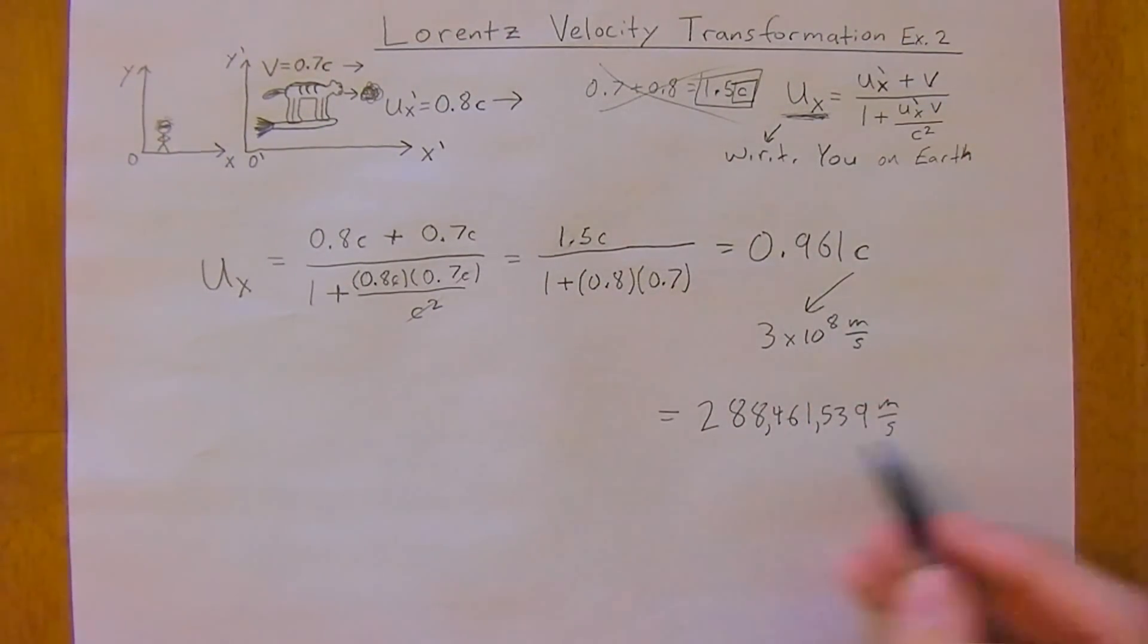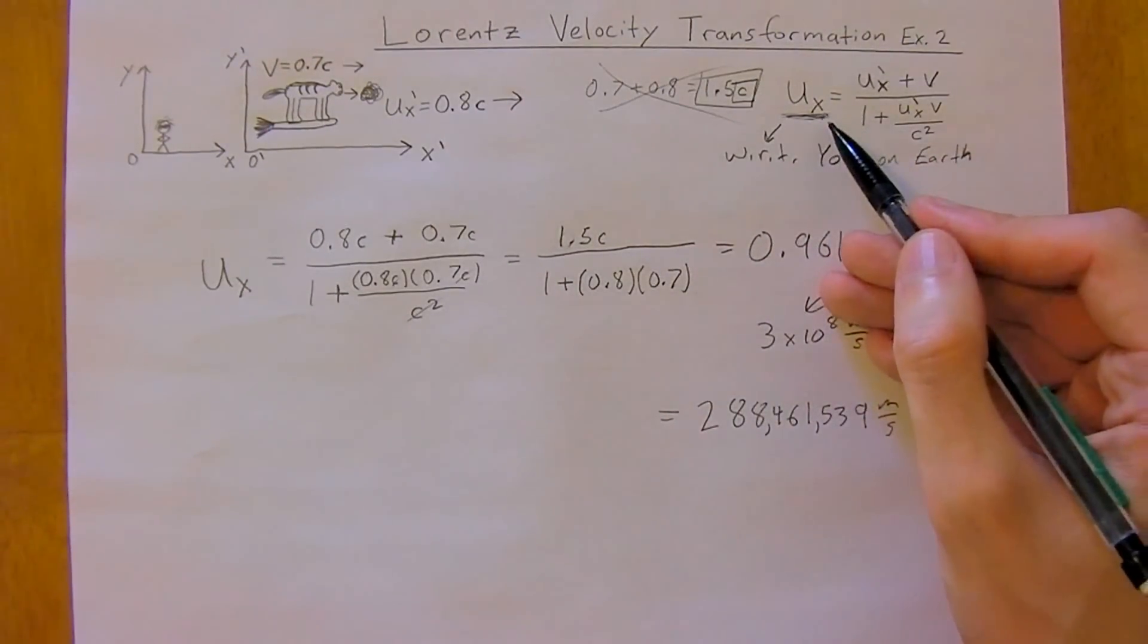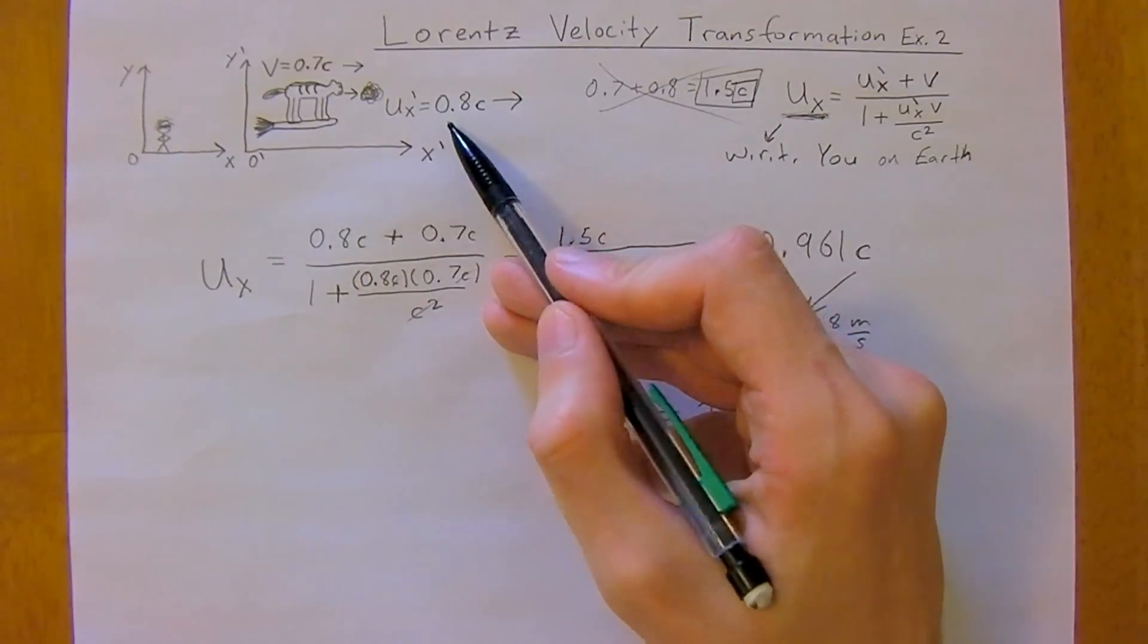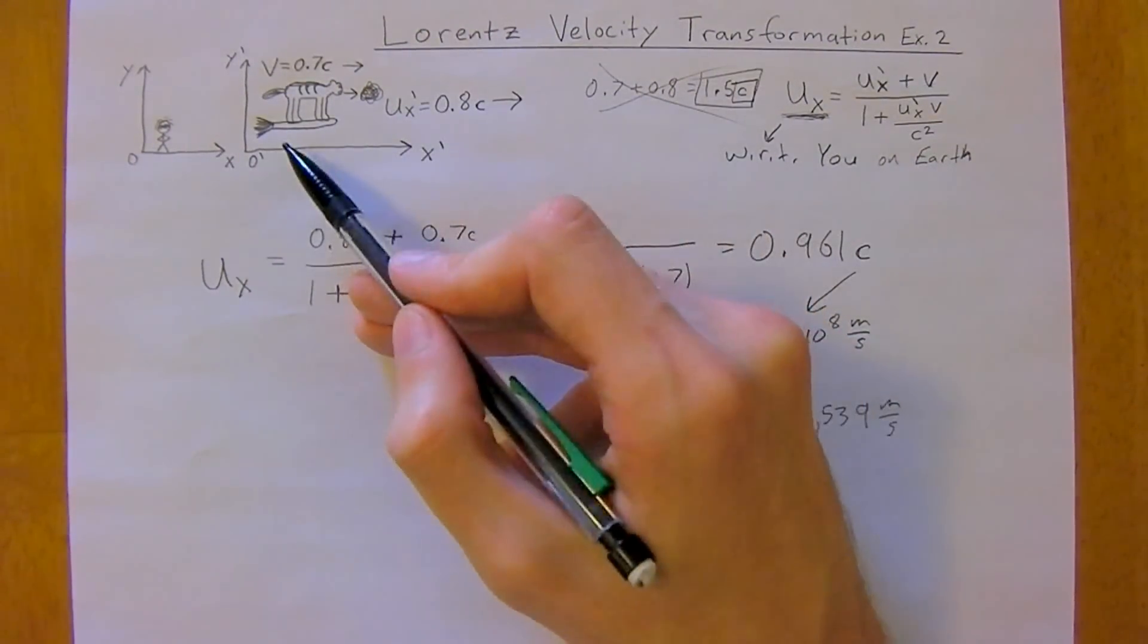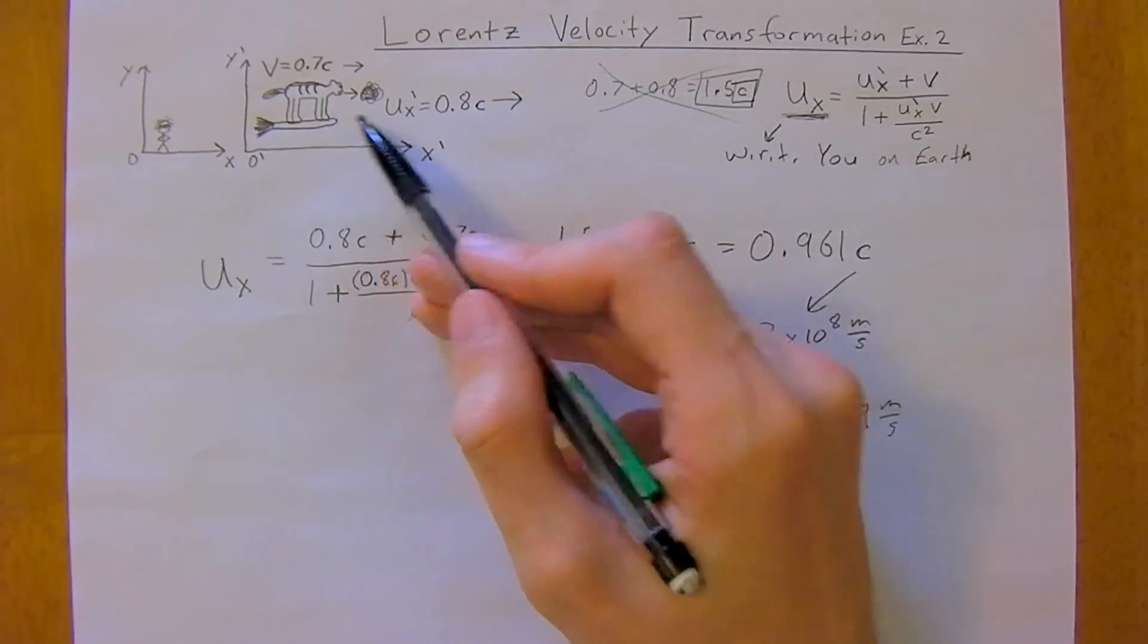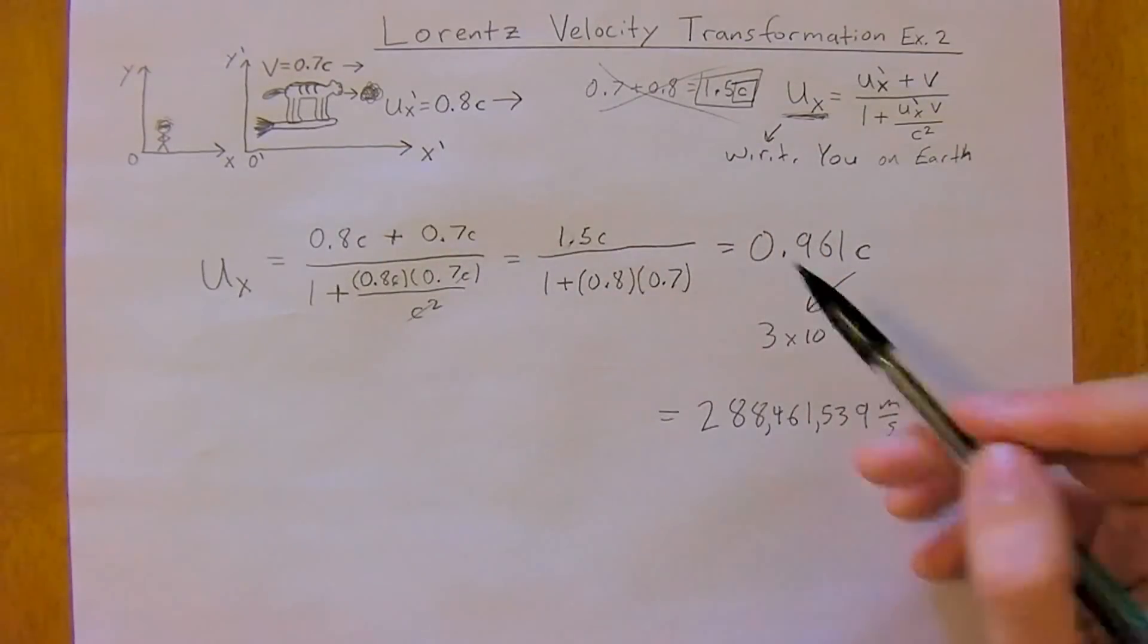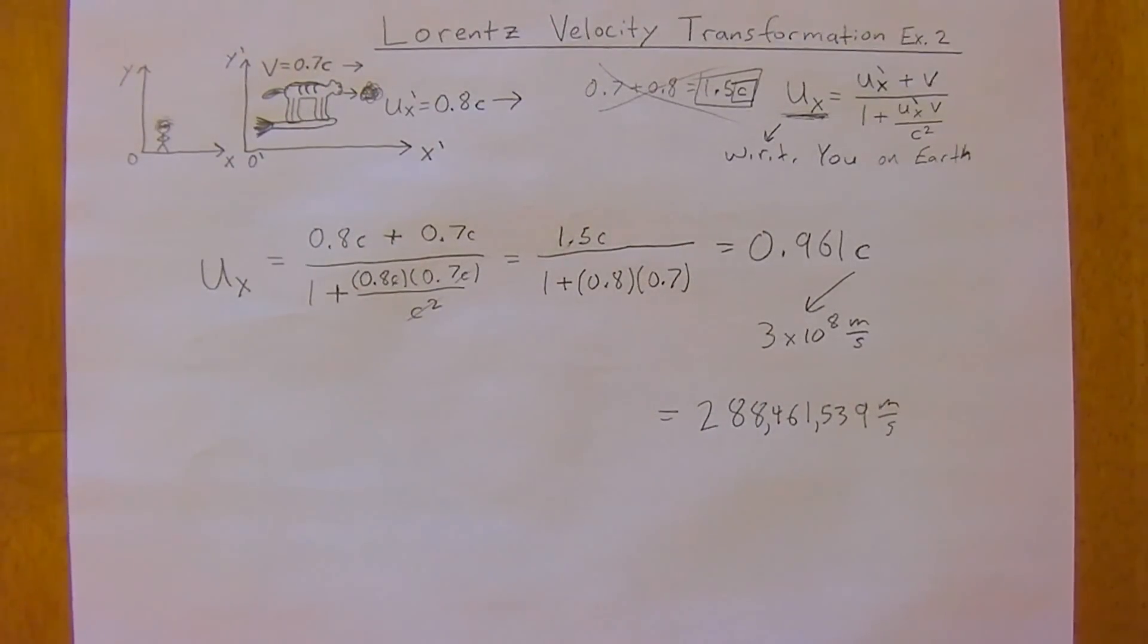So this is how you would determine it if the two relativistic velocities are traveling in the same direction. And in the previous video we figured out how you would determine it if the two velocities were traveling towards each other so in the opposite direction. That is basically it, okay see you in the next video.